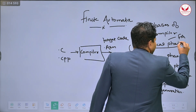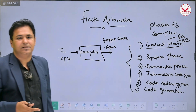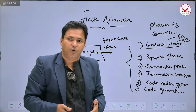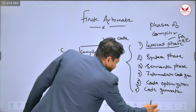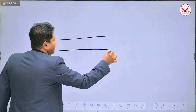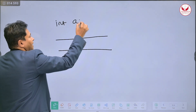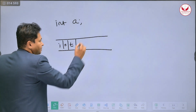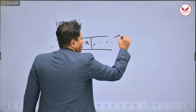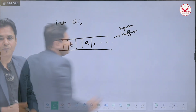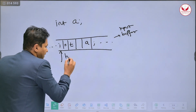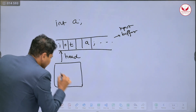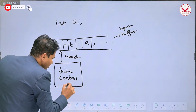Finite automata as well as regular expression — these are the two basic concepts required in the lexical phase of the compiler. The purpose of the lexical phase is to generate tokens. Here in the finite automata, we have an input — consider the input 'integer a semicolon', which is the declaration of a variable. It will be stored onto a buffer, that is the input buffer. To read the input, we require a head. The purpose of the head is to read the input from the buffer.